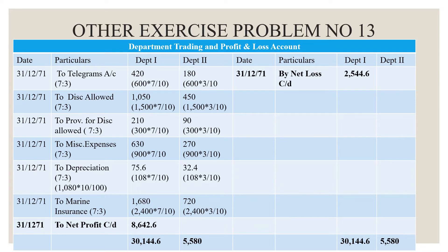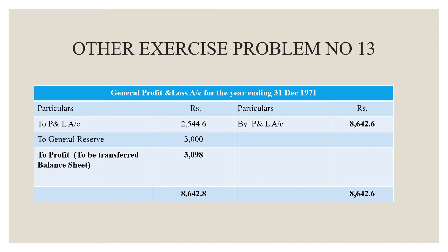Totalling both sides: Department 1 shows a net profit of 8,642.6 rupees, and Department 2 shows a net loss of 2,544.6 rupees. The grand total on both sides is 30,144.6 and 5,580 rupees. In the General Profit and Loss Account for the year ending 31st December 1971, the loss of 2,544.6 is on the debit side and the profit of 8,642.6 is on the credit side. General reserve increases by 3,000 rupees. The actual net profit of the combined concern is 3,098 rupees, with a grand total of 8,642.8.